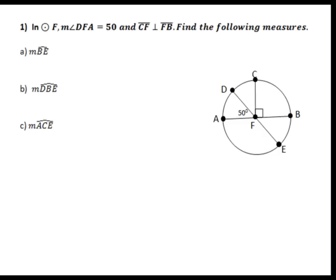Let's try some examples. Example one: what's the measure of arc BE? With two letters, BE is a minor arc. The measure of any minor arc equals the measure of its central angle. Since angle DFA is 50 degrees, its vertical angle is also 50 degrees. So the measure of arc BE is 50 degrees.